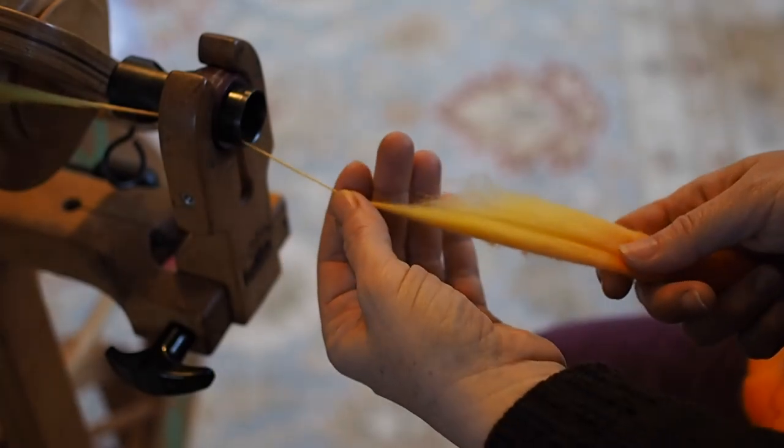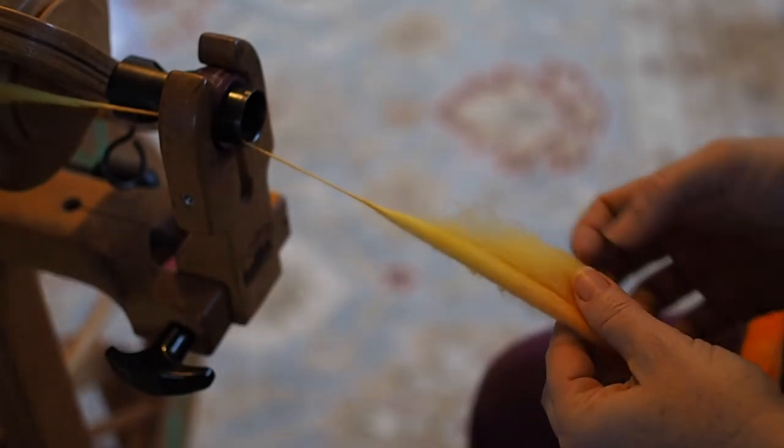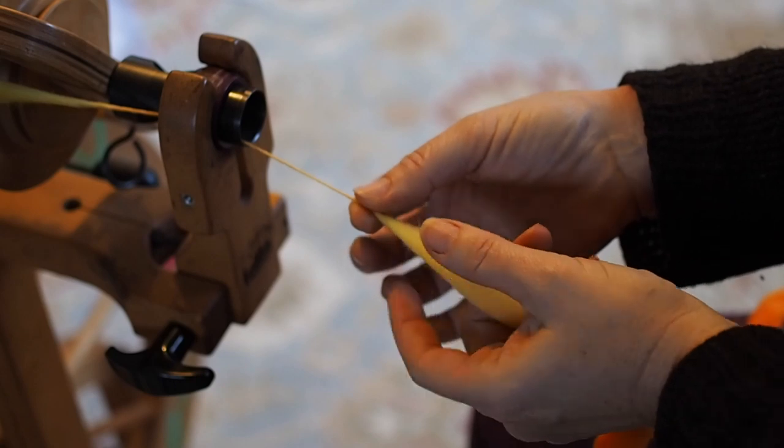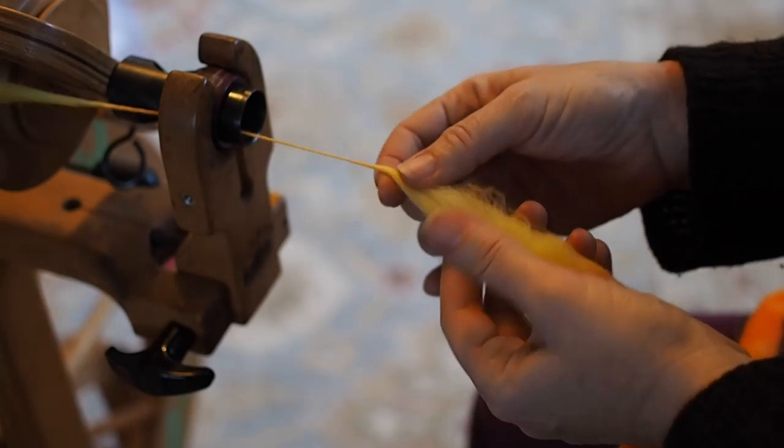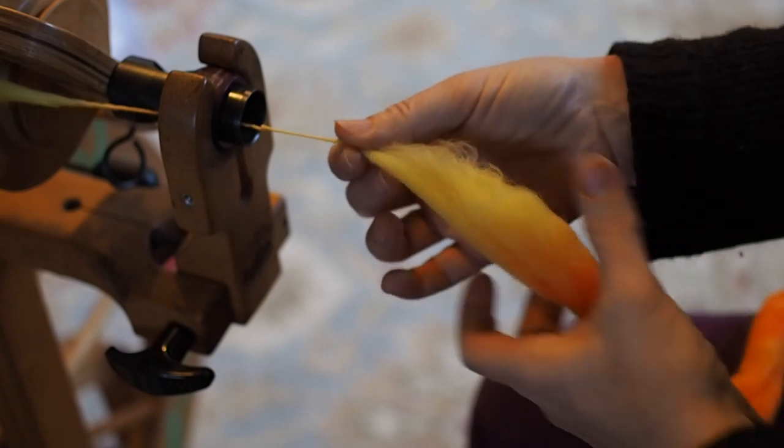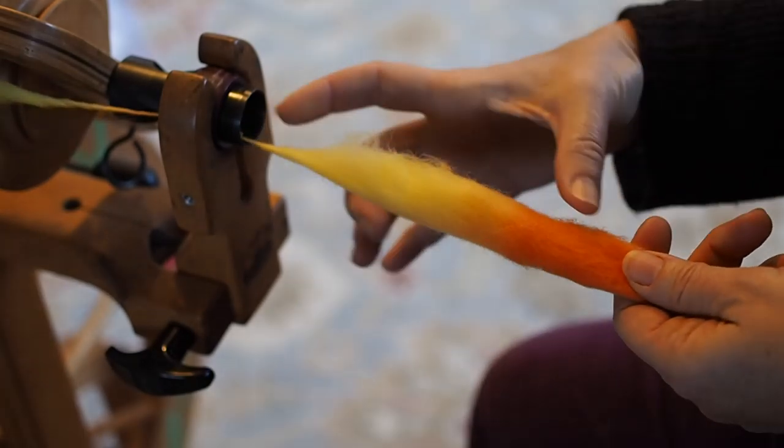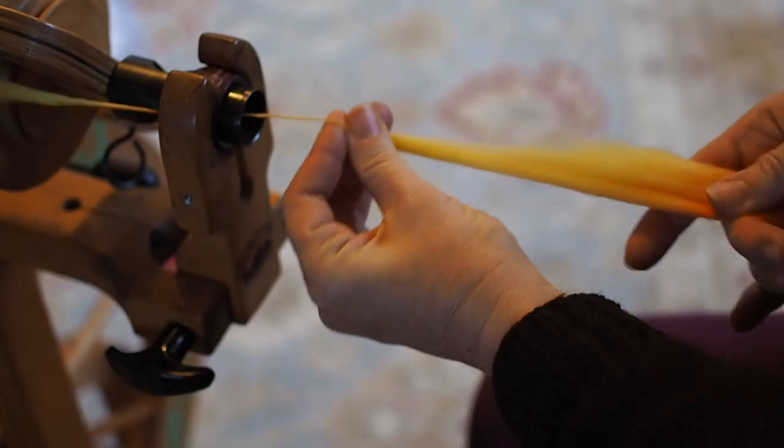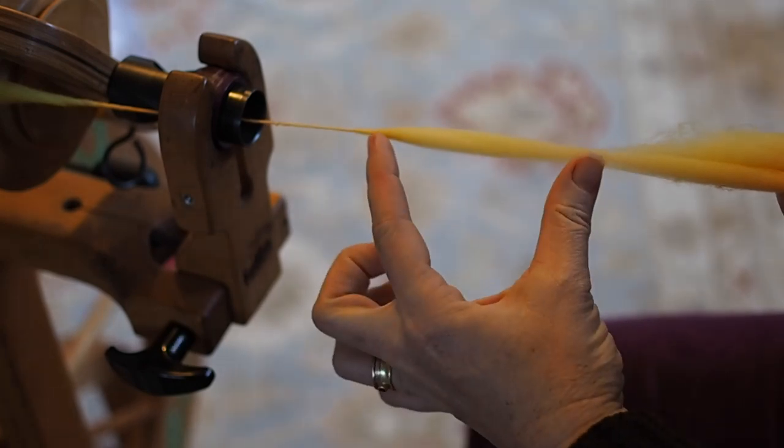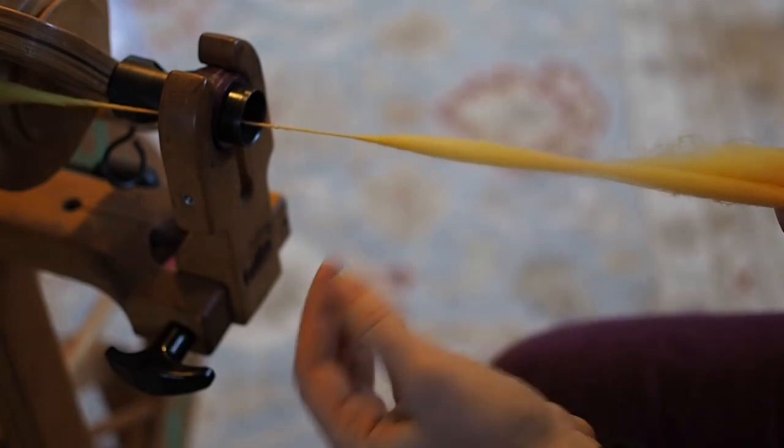You can do this with any staple length. A smaller staple length is going to have a smaller shorter coil. A longer staple length you'll have to pull out longer and will end up being a longer coil. So this one has maybe about two and a half, three inches.